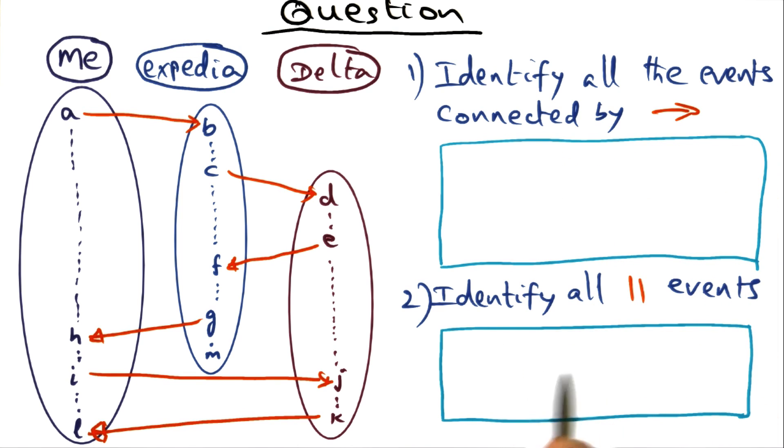In the second box, I want you to identify all the events that are concurrent events in the system. There's a whole bunch of events here, and I want you to identify the events you think are concurrent, meaning there is no way for us to assert that there is any ordering of the events in the system.